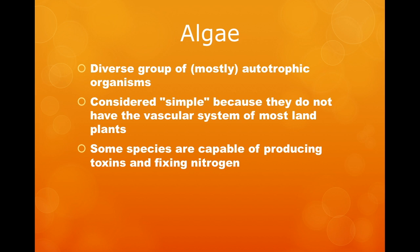What are algae? The term algae is generic, and it's used to categorize a diverse group of mostly autotrophic photosynthetic organisms. They are considered simple due to the lack of vascular tissue that can be found in most land plants. They grow very rapidly, and some species are able to produce different types of toxins, and some species can even fix their own nitrogen.